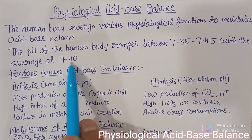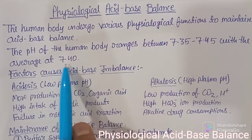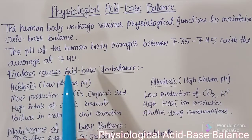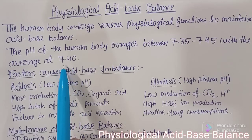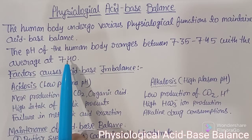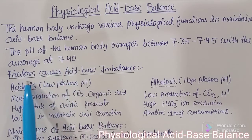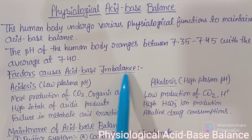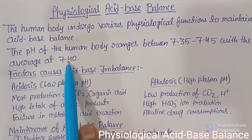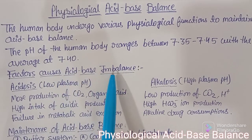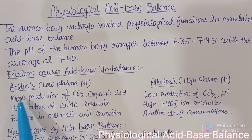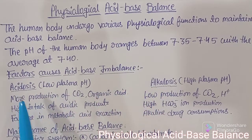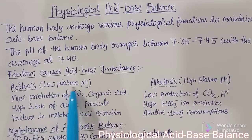What are the factors that can cause imbalance? Why does the body need to maintain physiological acid-base balance? There are two types of conditions: acidosis and alkalosis. Acidosis means low plasma pH or low blood pH — the blood pH drops below the normal range.